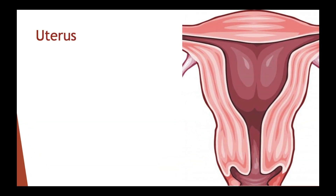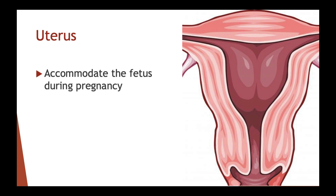The uterus or womb is a thick pear-shaped chamber. Its walls are muscular, which helps it expand during pregnancy to accommodate the fetus. Its inner lining, the endometrium, is highly vascularized with many blood vessels. The distal end of the uterus narrows to form a neck called the cervix that opens into the vagina.